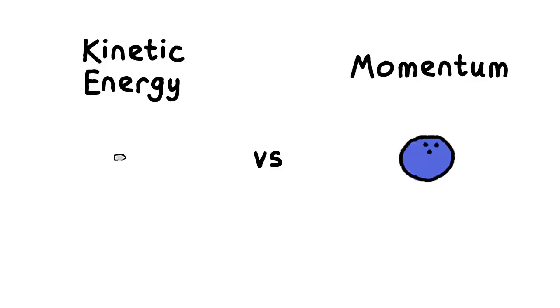So? We need to put in some numbers. Let's say the bullet is 10 grams, flying at 300 meters per second, and the bowling ball is 6 kilograms, sliding at 5 meters per second. Oh!